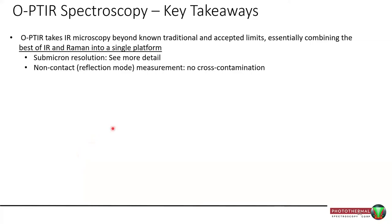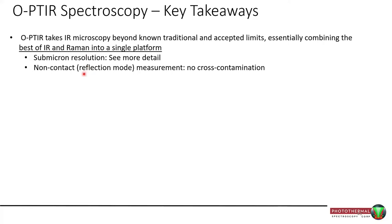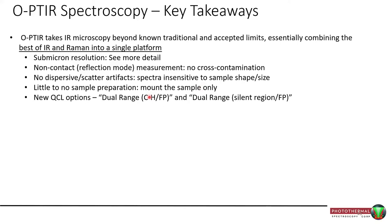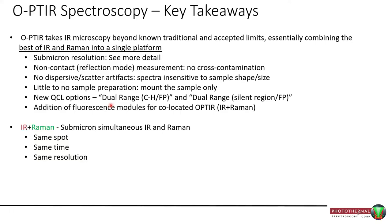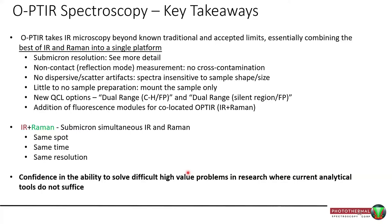In conclusion: by combining infrared with OPTIR, we get sub-micron information showing much more detail. It's non-contact and operates in reflection mode, so no cross-contamination and easy sample preparation. No dispersive scattering artifacts mean spectra are insensitive to sample shape and size, sensitive only to chemistry. New QCL options are expanding the range of applications, and we've recently added a fluorescence module so you can do co-located OPTIR and Raman alongside fluorescence images. IR plus Raman: same spot, same time, same resolution. I'll now hand over to Professor Harvard Helgen for the main act.